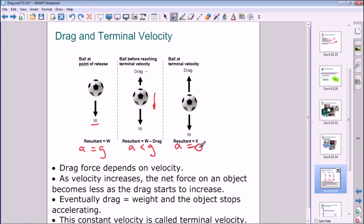So there's no resultant force, and there's no acceleration. The ball then falls with a constant velocity from that point onwards. And we call that constant velocity terminal velocity. It's the fastest velocity that the ball can actually achieve, bearing in mind that it's being acted on by drag forces.